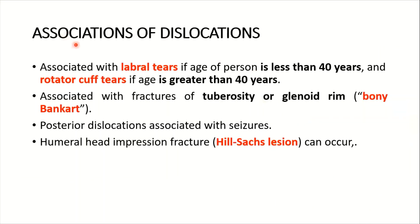Dislocation is associated with labral tears if the patient's age is less than 40 years, and with rotator cuff tears if age is greater than 40 years. When associated with fractures of the tuberosity of the glenoid rim, this is called a bony Bankart lesion. Posterior dislocations are associated with seizures, because a strong force is needed — provided by seizures or even electrocution — and with humeral head impression fractures, called Hill-Sachs lesions.